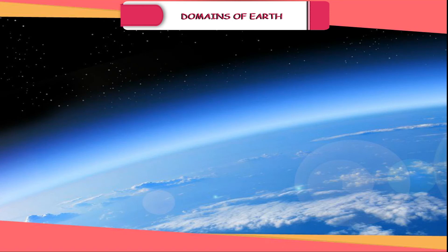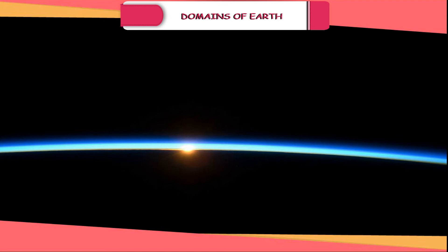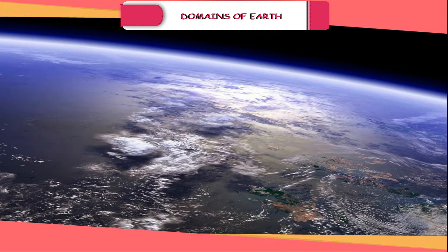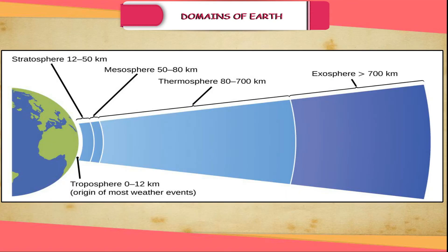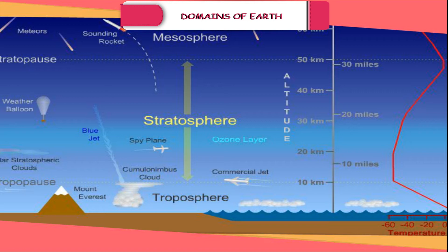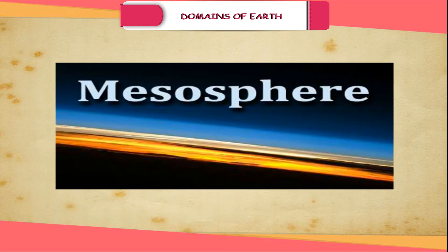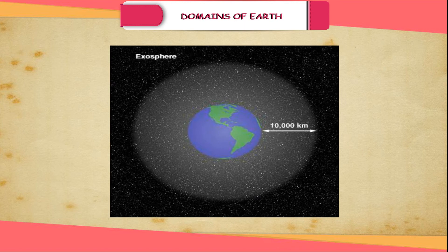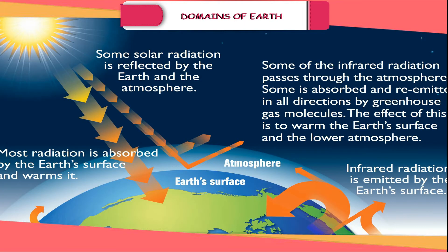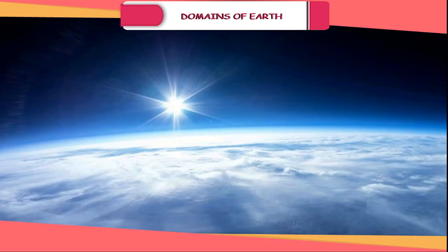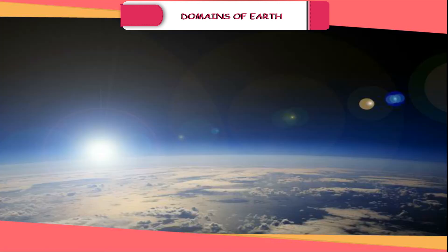Atmosphere. The blanket of air surrounding the Earth is known as the atmosphere. It extends up to about 1,600 kilometers from the Earth's surface. It is very dense near the Earth's surface and as we go up in the atmosphere, it becomes thinner and thinner. The atmosphere is divided into five layers depending on composition, temperature and other properties. These layers are called the stratosphere, the troposphere, the mesosphere, the thermosphere and the exosphere. These atmospheric layers prevent escape of heat from the Earth. They also do not allow harmful ultraviolet rays to reach the Earth. They also keep the Earth warm during nights and in winters.